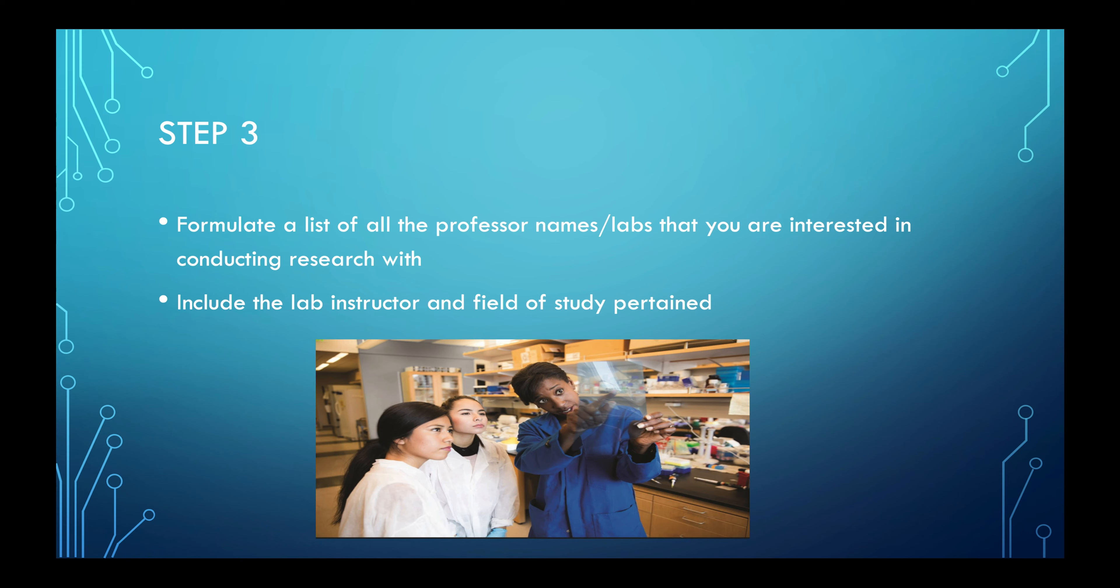Step 3. The third step involves listing all of the emails and contacts that you are going to be communicating with in order to try and gain a position within their labs. Create an Excel sheet, jot down their names, just make sure to have a list of who you will send an email to and what their area of research involves.